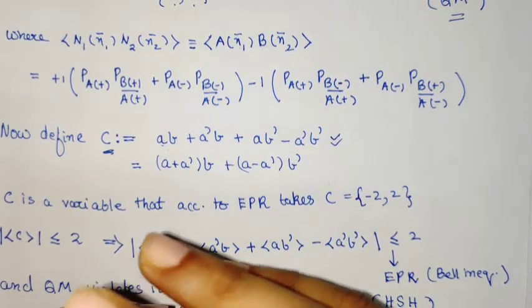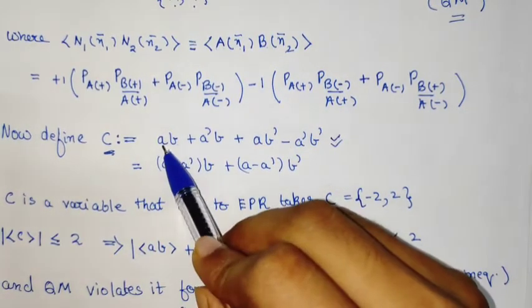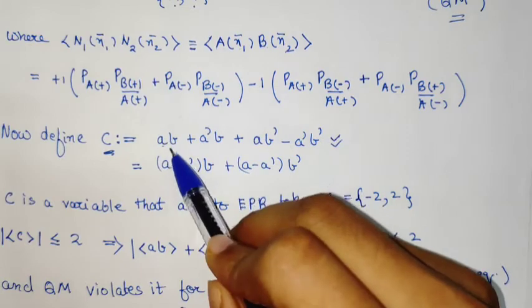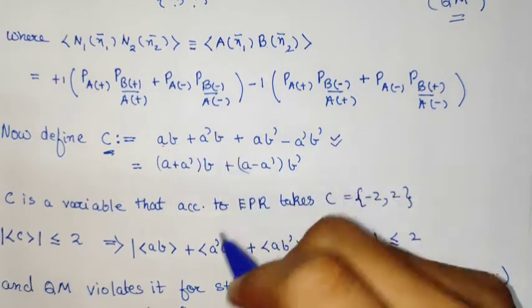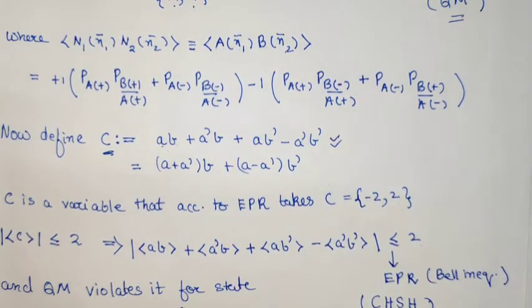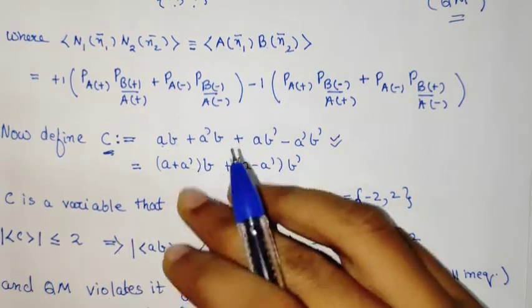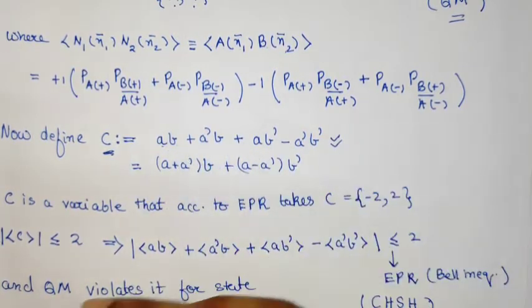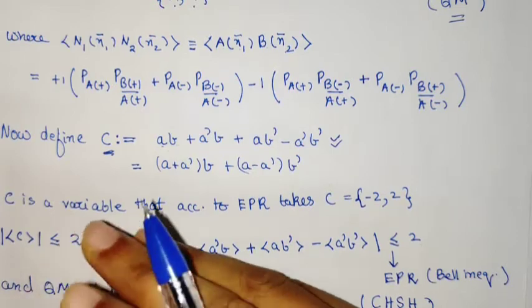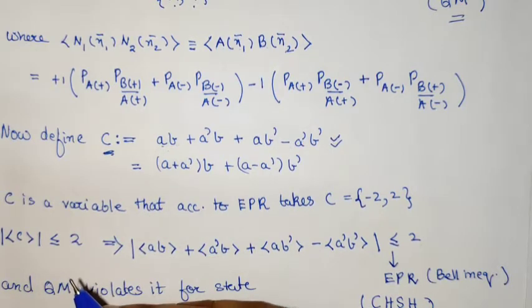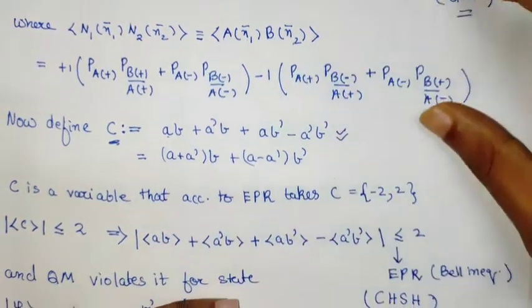It is clear from context that the value of spin is the only variable we have at present. We can arrange it like this. It is easy to see that a, a', b, b' all are values that can be either +1 or -1.